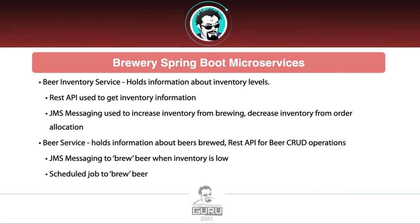The Beer Inventory Service is going to be holding information about inventory levels. It will expose a REST API to get inventory information, and the service also uses JMS messaging. We are increasing inventory from being notified of a brewing operation — if we brew beer, inventory goes up — and then we decrease inventory from orders being allocated. These are two different JMS messages that the service consumes.